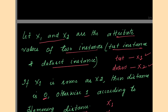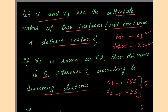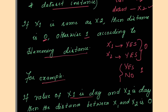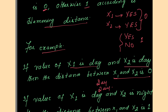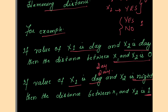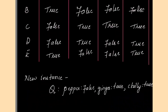If x1 is same as x2 — suppose x1 is 'yes' and x2 is also 'yes', both are same — then the distance computed is 0. If both are different, say one is 'yes' and another is 'no', then the distance computed is 1. For example, if x1 is 'day' and x2 is 'day', the distance is 0. Whereas if x1 is 'day' and x2 is 'night', then the distance is 1. This logic we apply to our given problem.